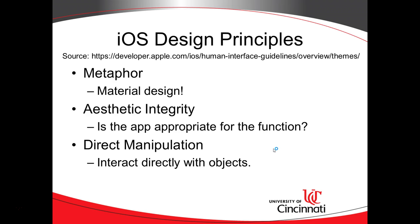Next, aesthetic integrity: is the app appropriate for its function? A gaming app needs to be very interactive, with splashes and explosions on screen. Whereas something like a TSA pre-check app needs to be very functional — displaying the user, the flight they're on, the date, and the gate. Very much functional.